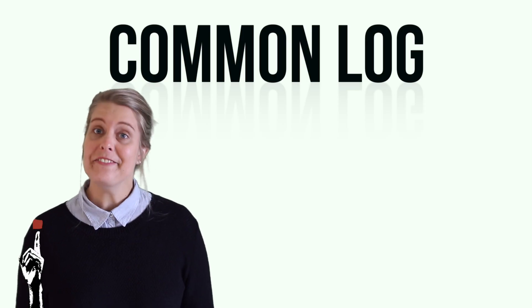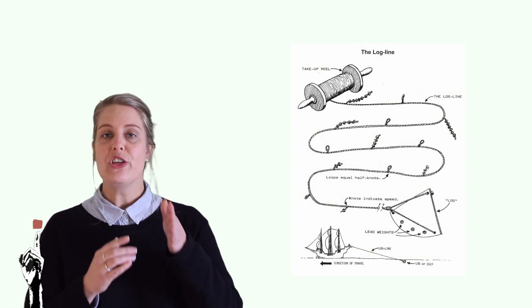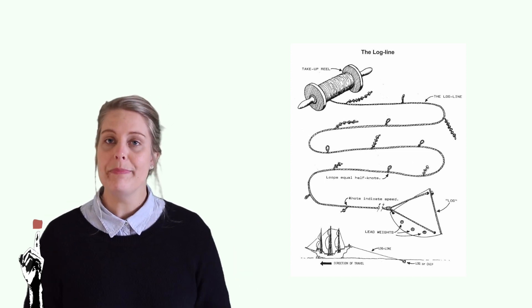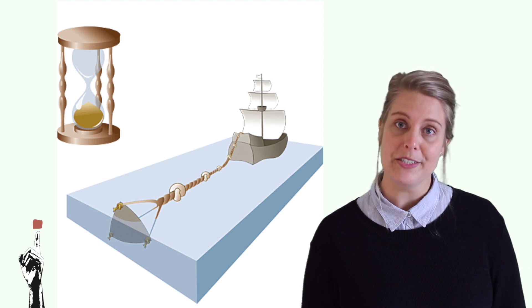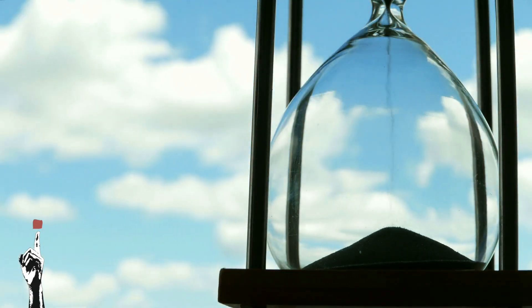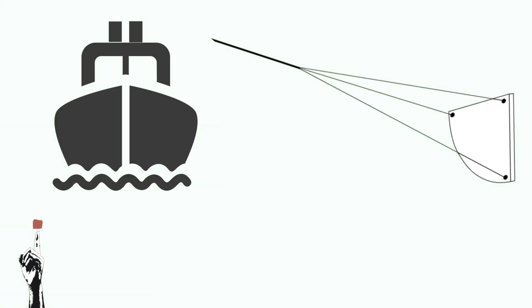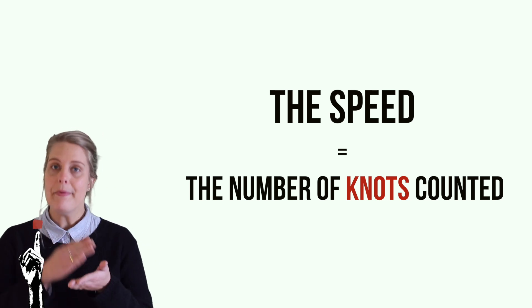The term knot dates back to the 17th century when sailors wanted to measure the speed of their ships using a device known as a common log. This device was a coil of rope with uniformly spaced knots attached to a piece of wood shaped like a slice of pie. The piece of wood was lowered from the back of the ship and allowed to float behind it. The line was allowed to pay out freely from the coil as the piece of wood fell behind the boat for a specific amount of time. When the specified time had passed, the line was pulled in and the number of knots between the ship and the wood were counted. The speed of the ship was said to be the number of knots counted.